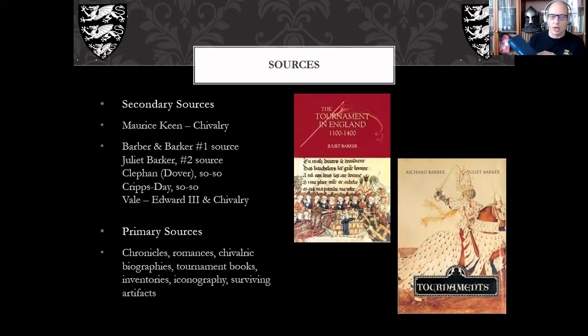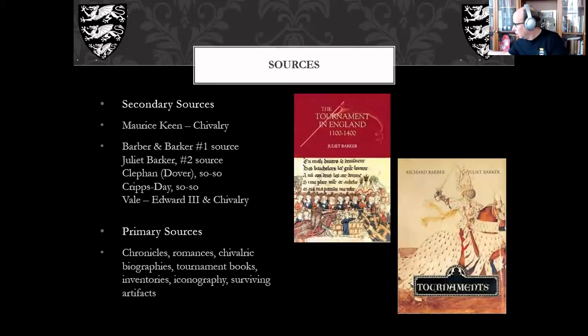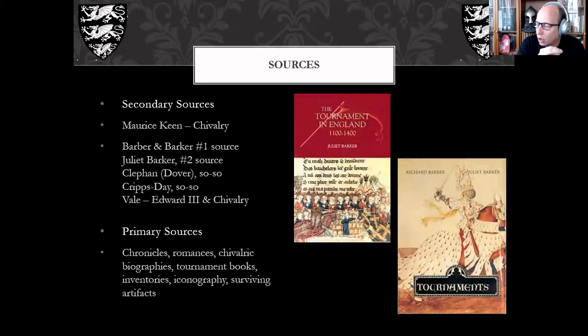There's another book by Clephan available from Dover — 19th century, very outdated in dating and suppositions, but includes some good primary sources. There's one by Cripps-Day as well — a reprint by AMS from the early 20th century with a lot of primary sources, though not strong on interpretation. And one probably not thought of as a tournament book: Edward III and Chivalry by Juliet Vale — a fine but hard-to-find book covering tournaments before and during Edward III's reign, up to the Order of the Garter.